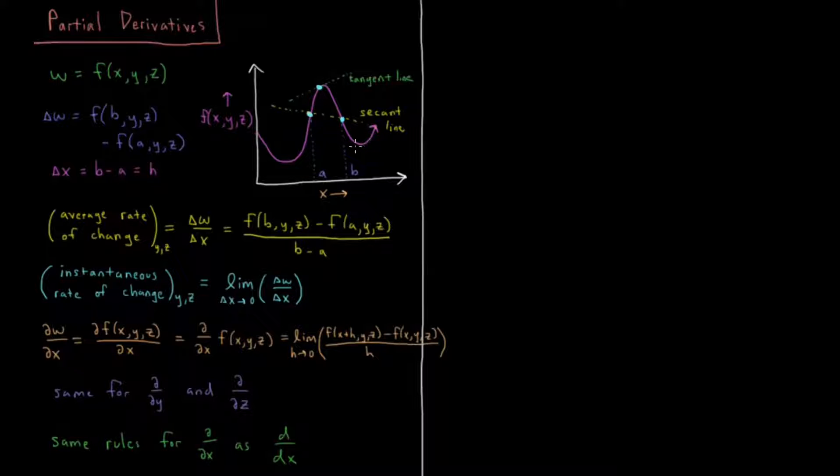I can go through the same kind of logic I did in the regular derivatives video, where I can have a point a and a point b. The function has some value at f(a, y, z) and f(b, y, z). So the change in the function between those two points in this one-dimensional slice will be delta w equals f(b, y, z) minus f(a, y, z). And the change in x over this range would be delta x equals b minus a, which is equal to the value h.